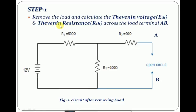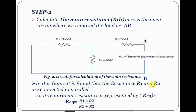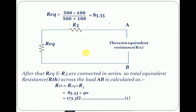Step one: remove the load and calculate the Thevenin voltage ETH and Thevenin resistance RTH across the load terminal AB. Step two: calculate Thevenin resistance RTH across the load terminal AB. Here the voltage source is replaced by a short circuit. From this figure, it is found that resistances R1 and R2 are connected in parallel. So the equivalent resistance is calculated as R_eq = (R1 × R2) / (R1 + R2), whose value is 83.33 Ω.